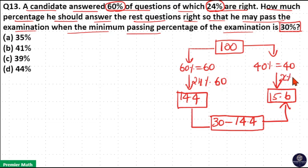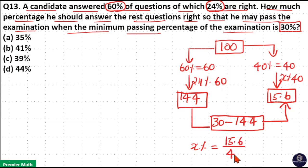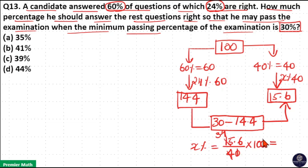So x% of 40 equals 15.6, and we need to find x. He should correct 15.6 questions out of 40 to achieve 30% total in the examination. Dividing: 4 goes 3 times into 15 with remainder 36; 36 ÷ 4 = 9, giving 3.9. So 3.9 × 10 = 39%.